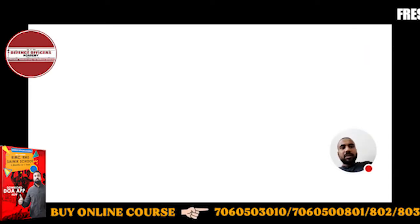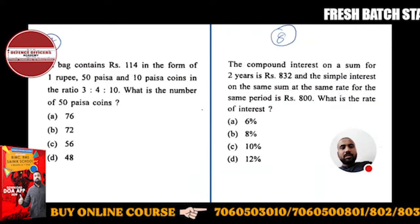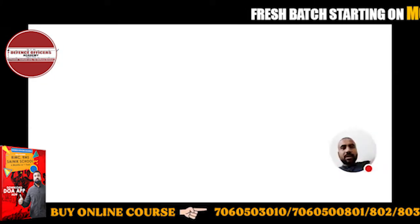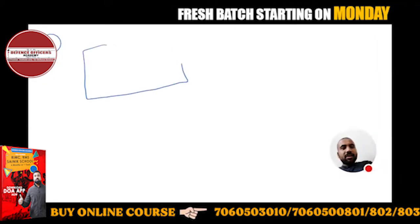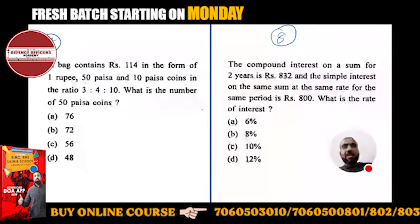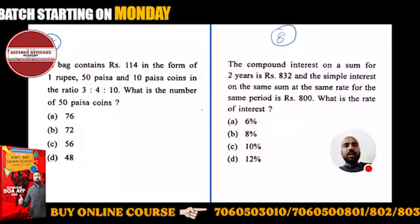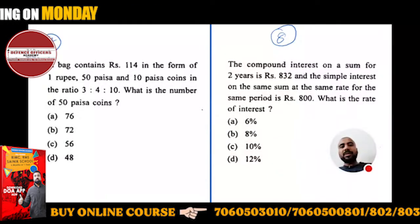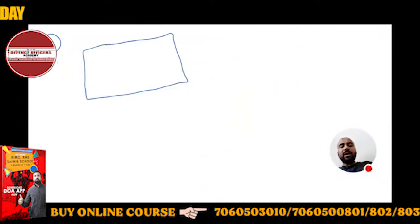Question number seven: Suppose there is a bag. This bag contains Rs. 114 total in the form of one rupee coin, 50 paisa, and 10 paisa coins. So I will take 100 paisa coin.